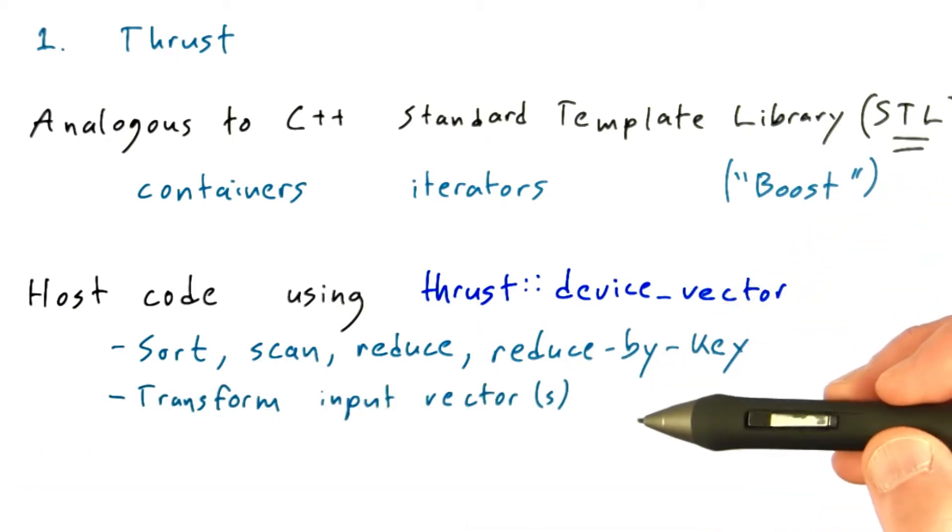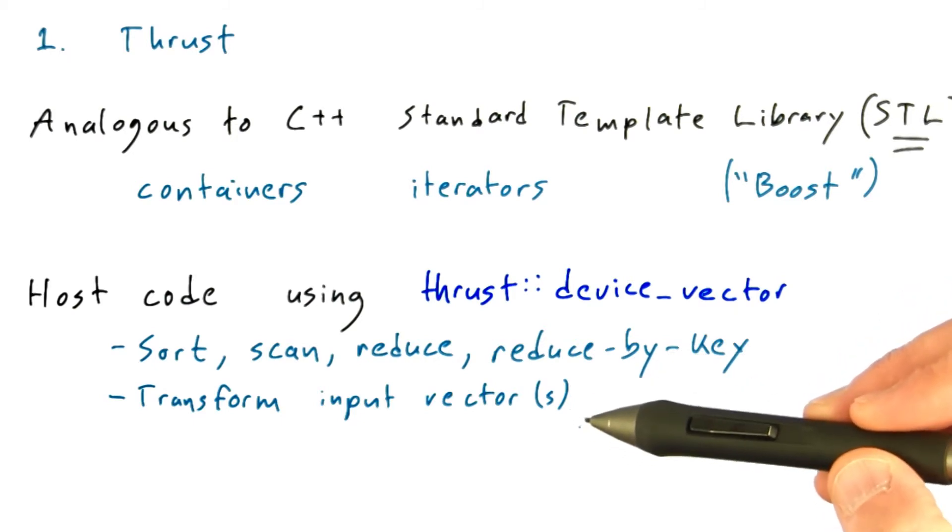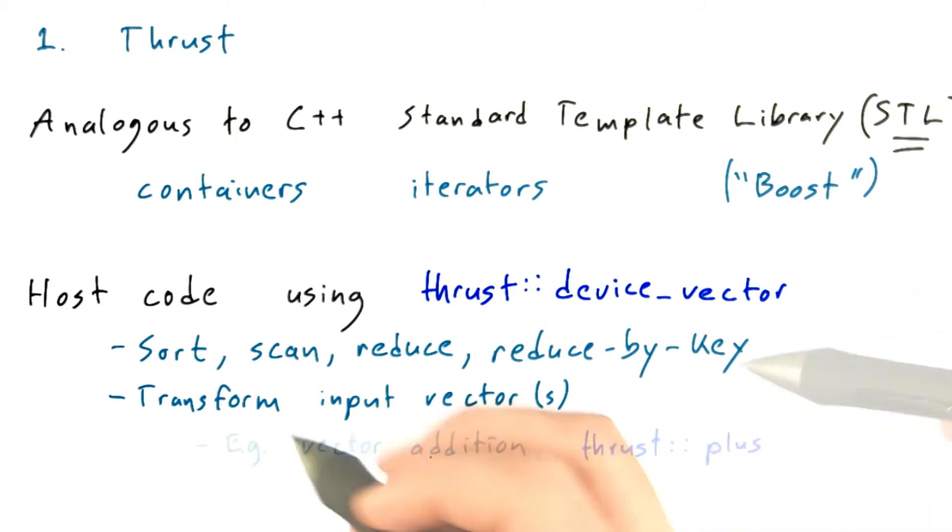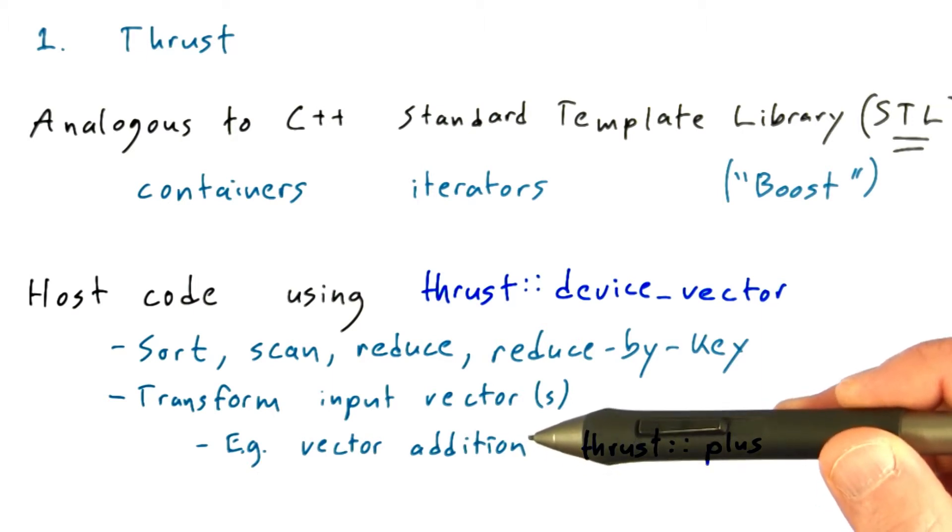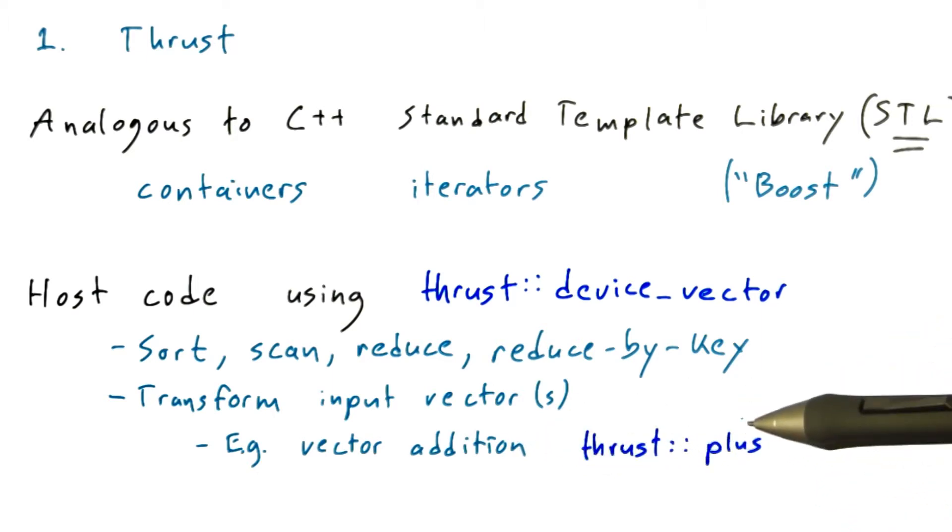You can also do more general transformations. You can transform one or more input vectors into an output vector. For instance, you could do a vector addition operation, taking two vectors and adding them into a third vector using the built-in thrust plus operator.